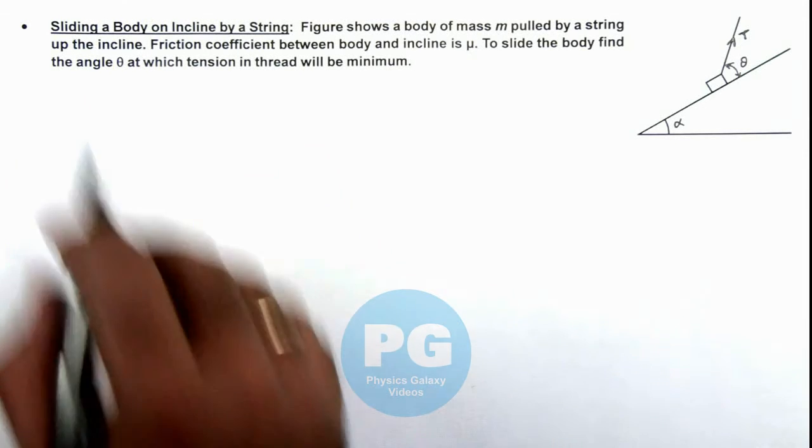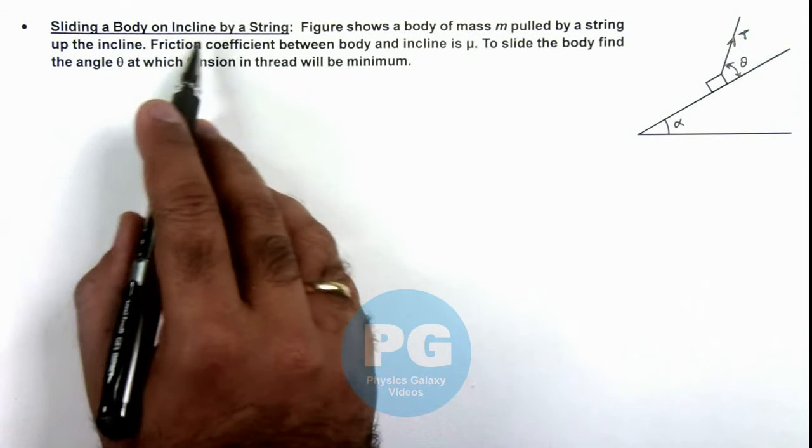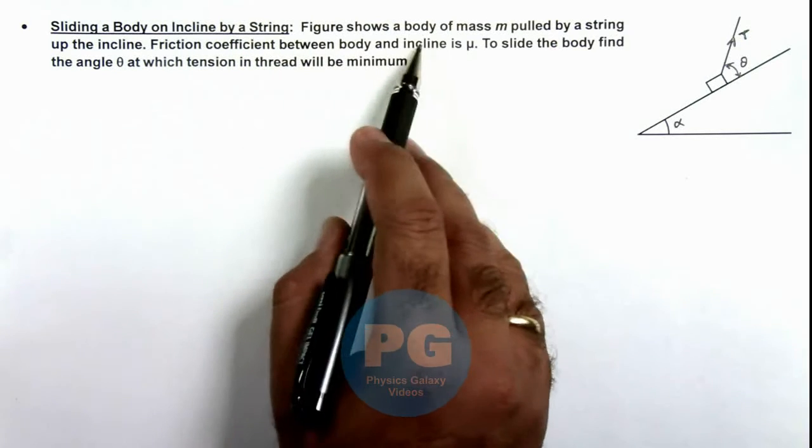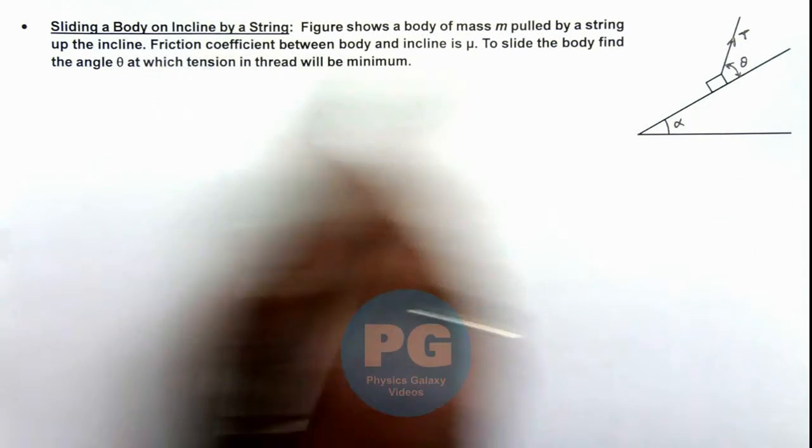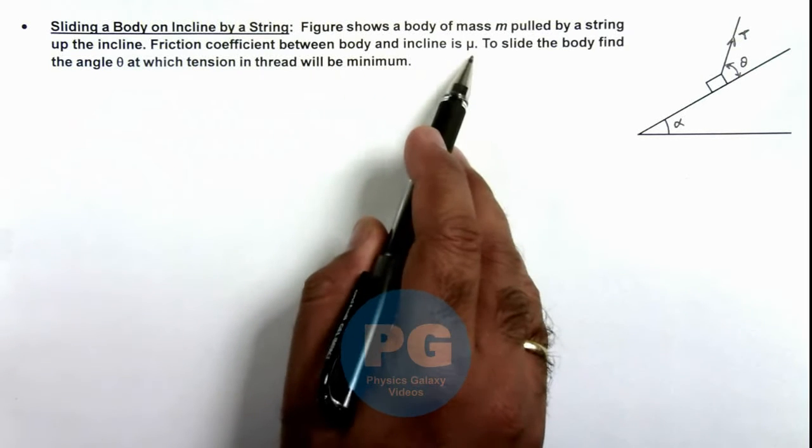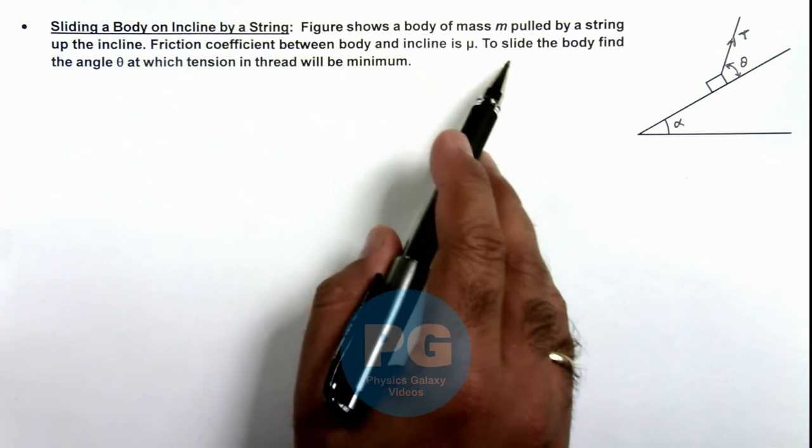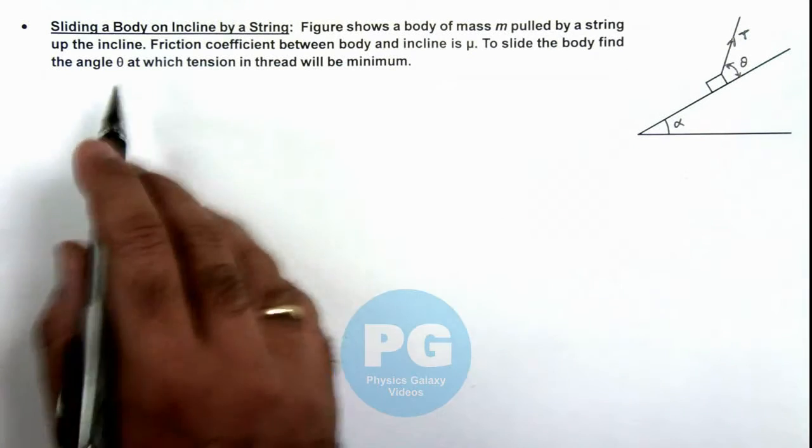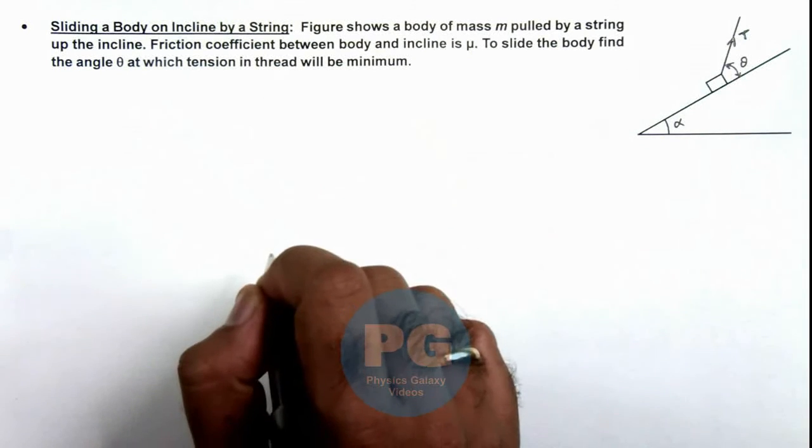This illustration is about sliding a body on incline by a string. Here, the figure shows a body of mass m pulled by a string up the incline. The friction coefficient between body and incline is μ, and to slide the body we are required to find the angle θ at which tension in thread will be minimum.